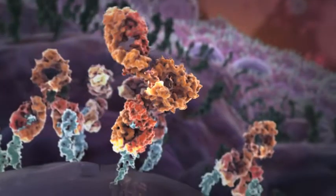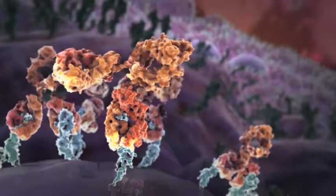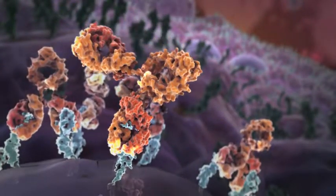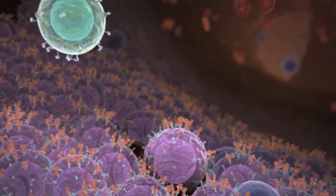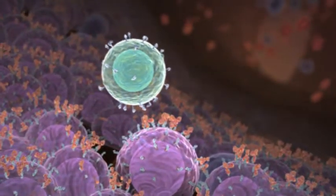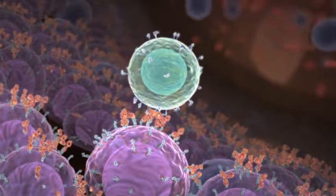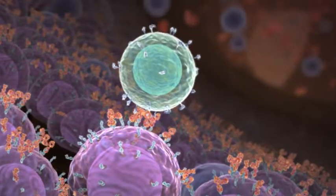Specifically, HULUC63 selectively binds to CS1 on the surface of myeloma cells. The bound HULUC63 then recruits NK cells and activates them by engaging the FC receptor on the surface of the NK cells.